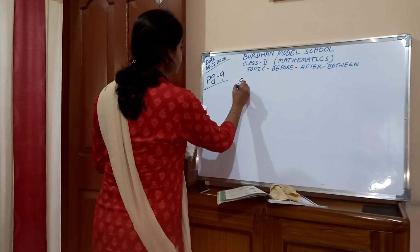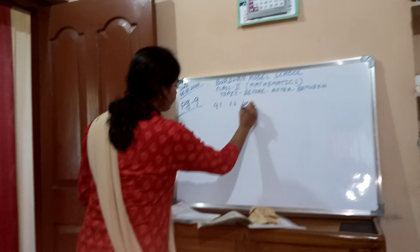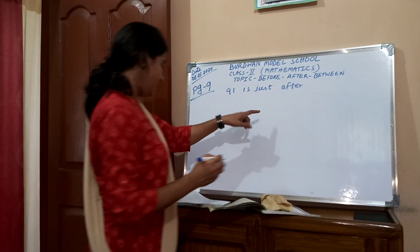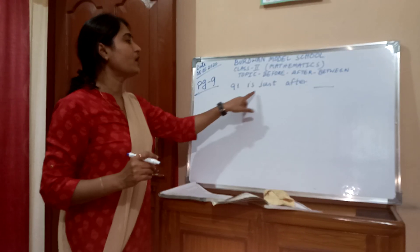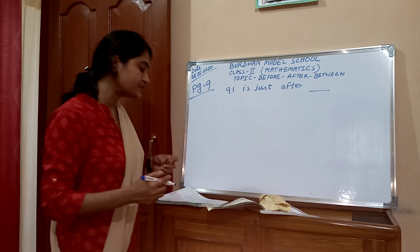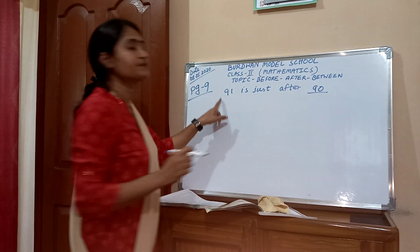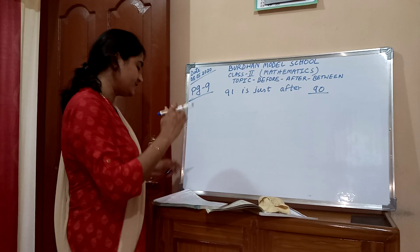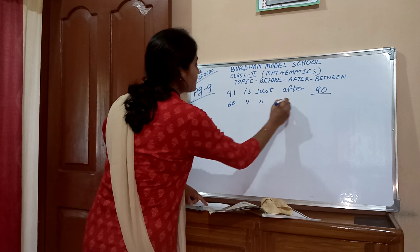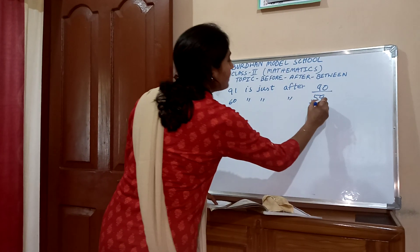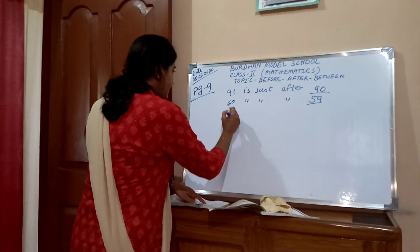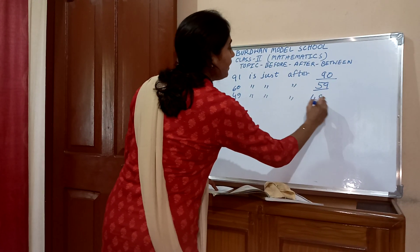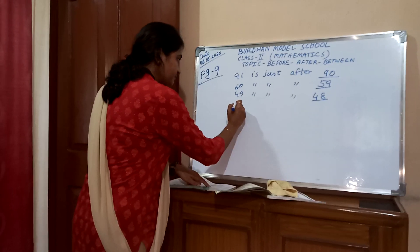Alright, 91 is just after — this is the after number. After dash — 91 is just after 90. So 90's just after number is 91. 60 is just after 59. 49 is just after 48.